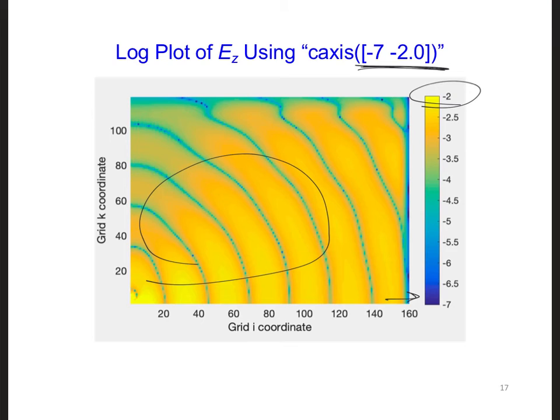Go ahead and change the scale back to minus 3.2 to minus 2 so that we can focus on what's happening in the earth ionosphere waveguide. And that will be more useful to us.